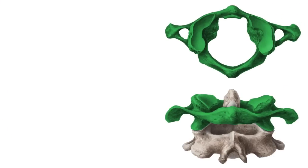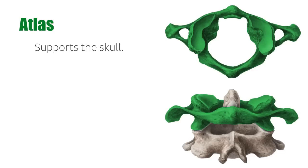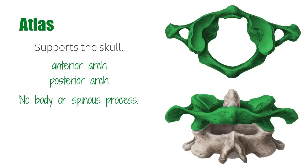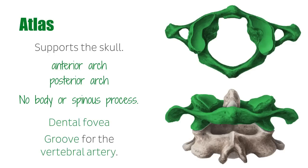The first cervical vertebra, C1, otherwise known as the atlas, is also the first vertebra in the spinal column. It supports the skull, which sits directly above it, and it only has an anterior arch and a posterior arch, with no body or spinous process. Laterally, large bone masses help to support the occipital condyles of the skull superiorly and balance the atlas upon the axis inferiorly. The foramen transversarium is located within a large transverse process. The anterior arch has a dental fovea, where the dens of the axis articulates with the atlas. The posterior arch contains a groove for the vertebral artery, as well as a posterior tubercle, which is a rudiment of the spinous process.